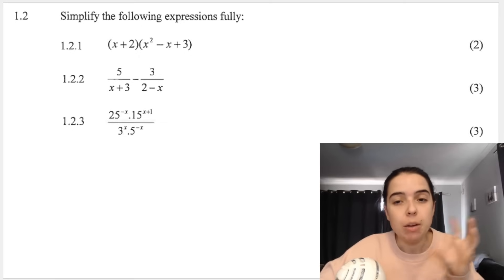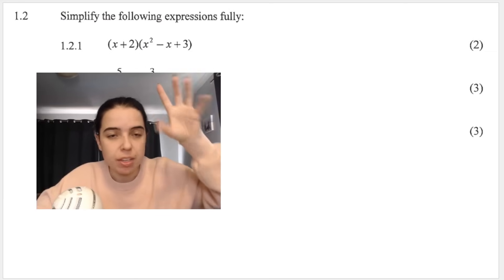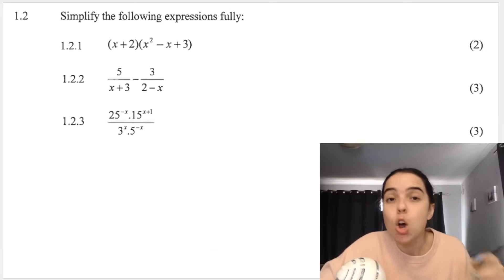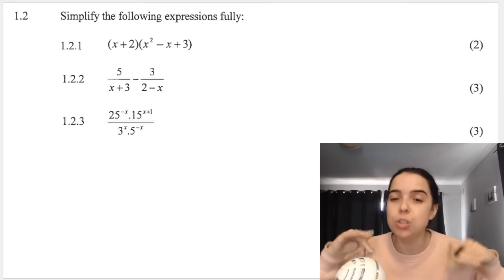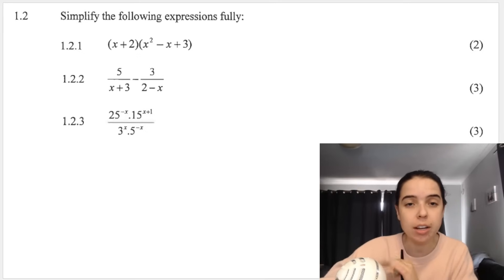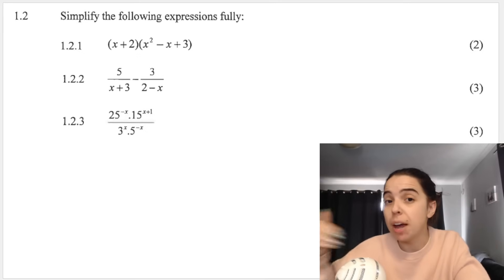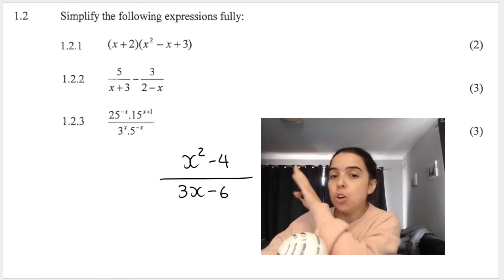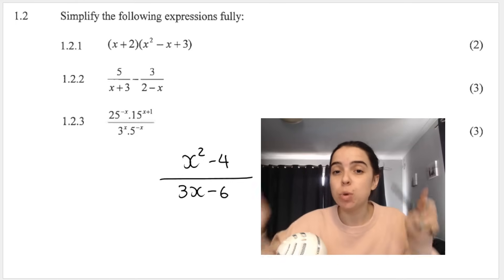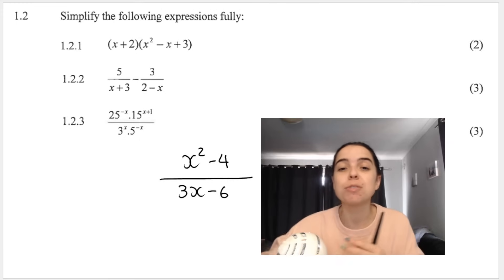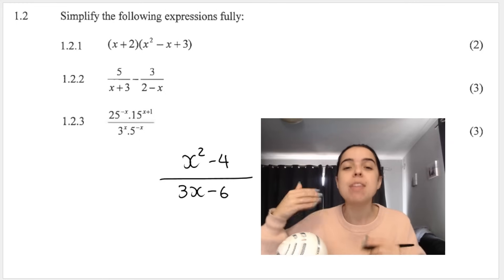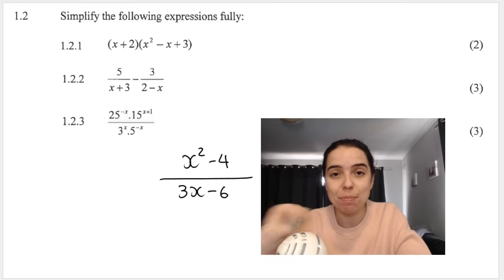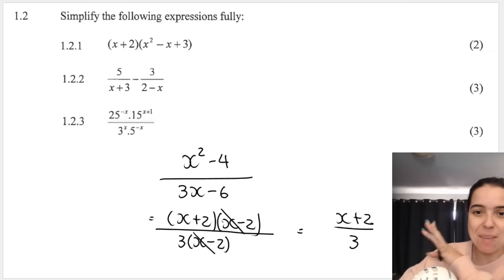Moving on to 1.2: simplifying. Remember, when the question says simplify, you may need to factorize first. For example, if you have a fraction with two terms on top and two on the bottom, you can't cancel yet — you'd first factorize top and bottom, then cancel and simplify.